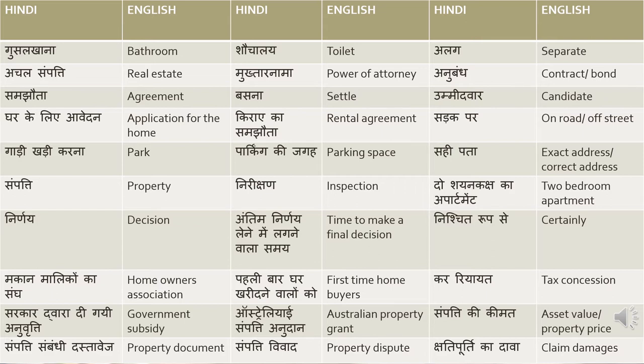Kariyat tax concession — in Australia, first-time home buyers get a tax concession and also some amount of money. Sarkar dwara di gai anuvritti means government subsidy — anuvritti is subsidy. Australiai sampatti anudan means Australian property grant. Sampatti ki keemat means asset value or property value — asset is also translated as sampatti. Sampatti sambandi means property document. Sampatti vivaad means property dispute. Kshati purti ka dava means claim damages — kshati purti is damages.